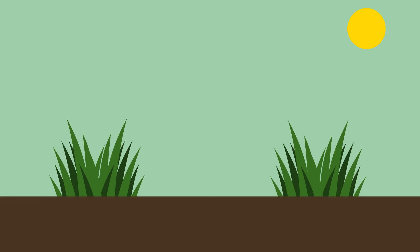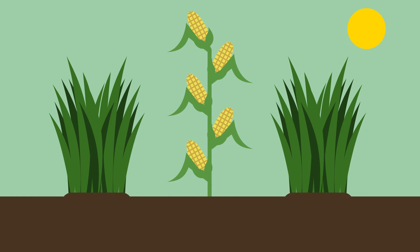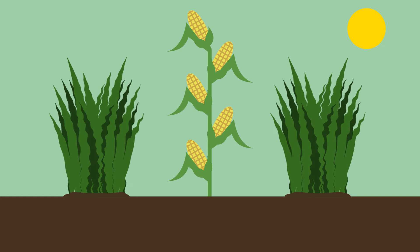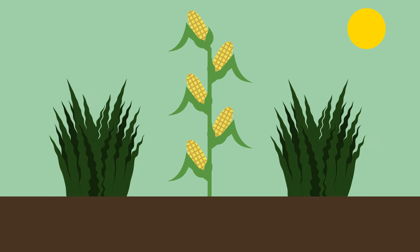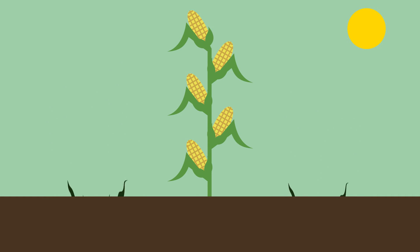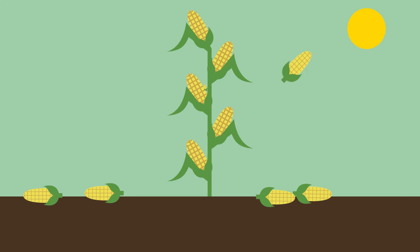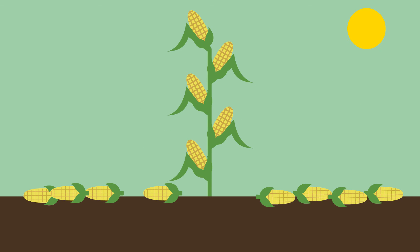So crops can also be genetically modified to be resistant to weed killers, which means that only the weeds will be killed. This doesn't reduce the amount of chemicals sprayed on a field, but it does mean that higher yields can be gained.